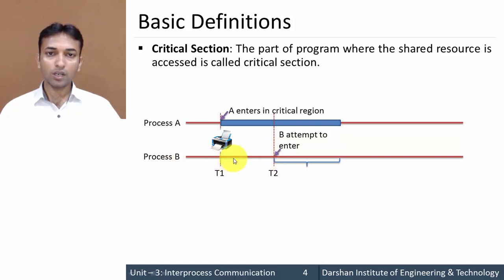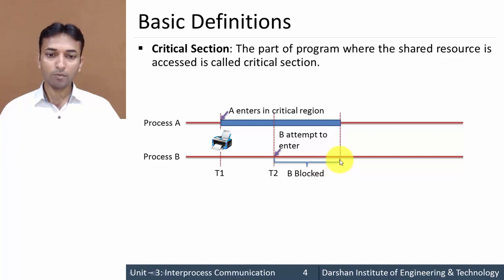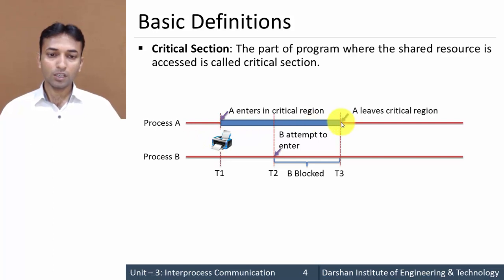But process B is not allowed to enter the critical region, meaning process B is not allowed to use this printer. Why? Because process A is already in the critical region, meaning process A is already using this printer. That's why process B is blocked until process A exits from the critical region. So process B is blocked up to a certain point. Now at time T3, process A's work is finished, so process A releases this printer and exits from the critical region. So from T1 to T3, process A is using the shared resource — the printer — and is in the critical region.